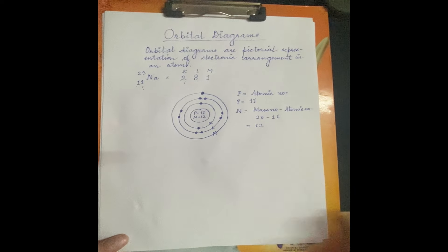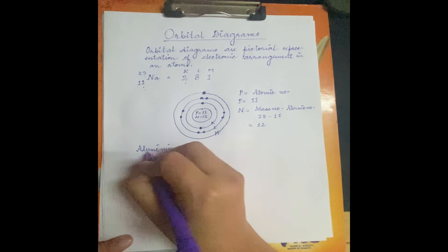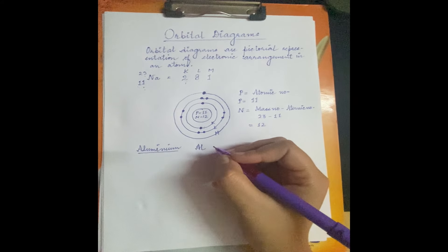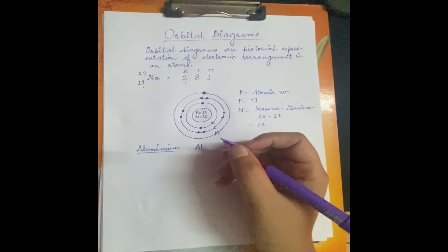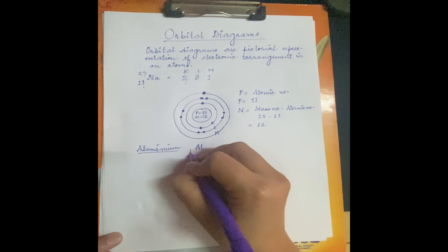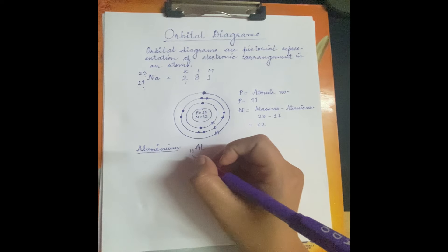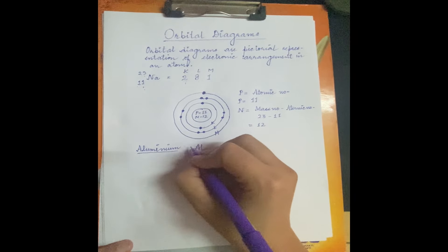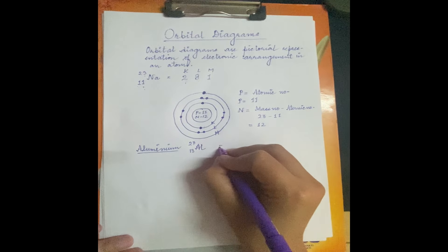Next, let's take the example of aluminium. Aluminium's symbol is Al (capital A, small l). It is very important to learn the atomic numbers of elements. Aluminium's atomic number is 13, and mass number is 27. From the atomic number alone, you can calculate number of protons, neutrons, electrons, valency, and electronic configuration.